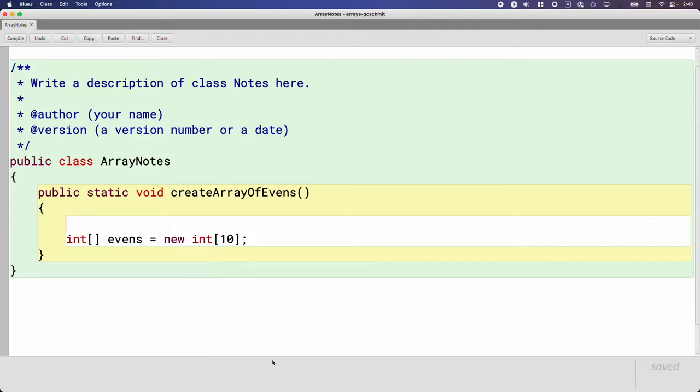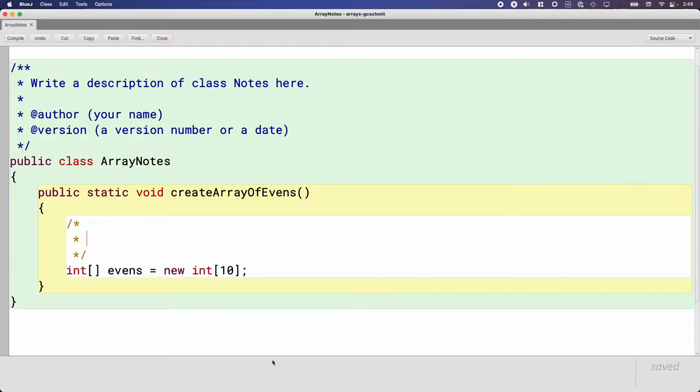So that's the admittedly odd syntax for how we create a new array. Arrays in Java, the syntax for them, are identical to arrays in the C programming language. And so I think they did that because when Java came about, there were a lot of people familiar with C. That doesn't help any of us at all. But I think that explains why it's a little bit different than everything else in Java. So let's break this down piece by piece as we go through this line of code.